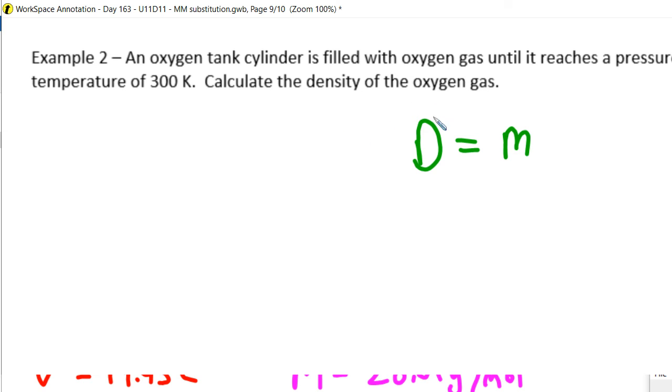Alright. So we got a new equation. Density is equal to MP over RT. And so over here, I'll make my list down the left-hand side. Alright.